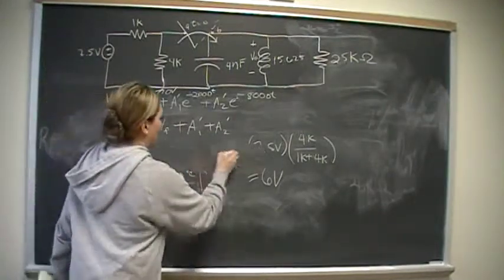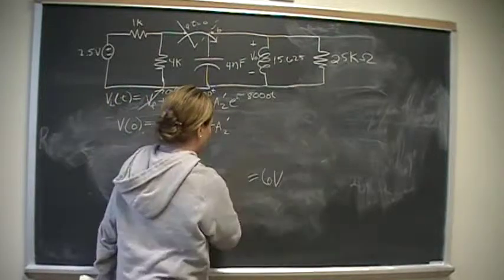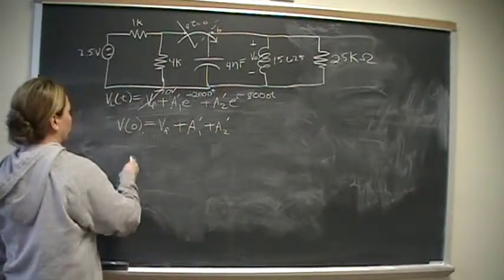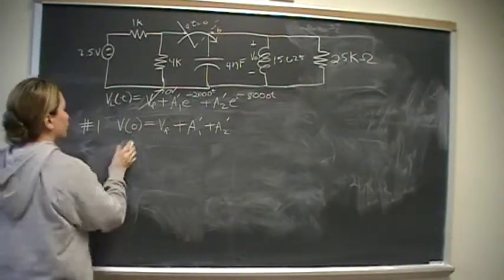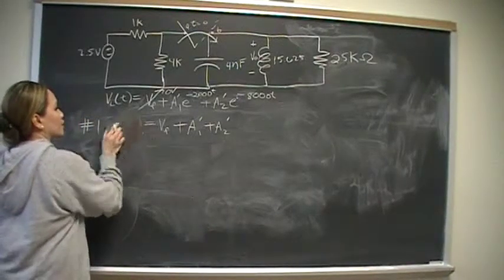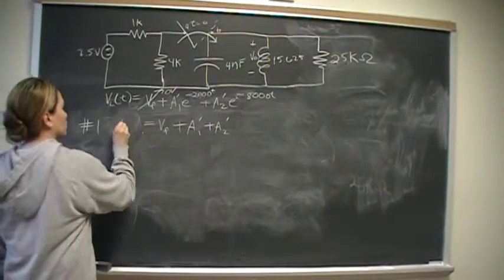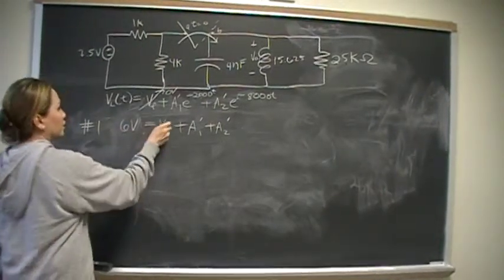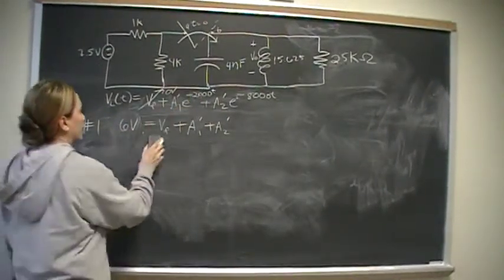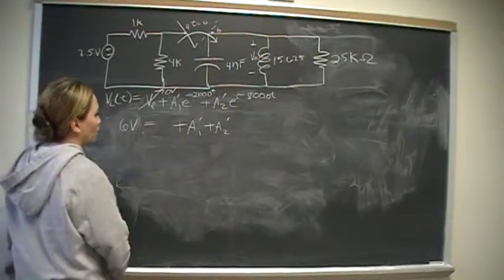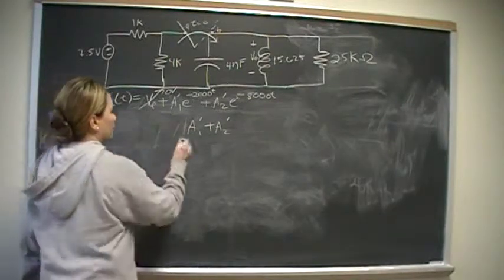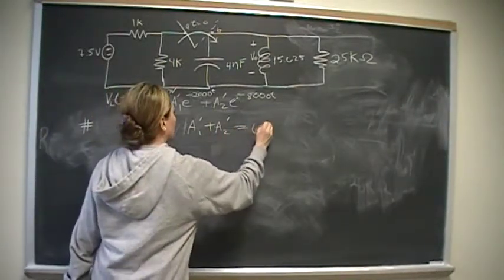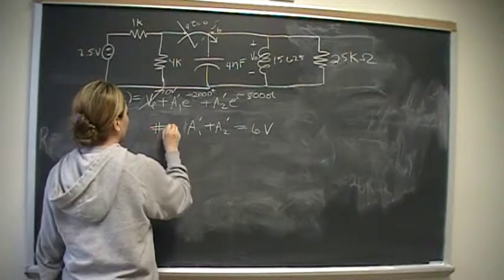So now we have the first equation out of two equations that we need in order to solve. This is number one. Initial capacitor or initial voltage is 6 volts. V final is zero. It's not connected to anything. So over time everything will dissipate. So we're left with 6 volts. A1 plus A2 is equal to 6 volts. That's equation number one.